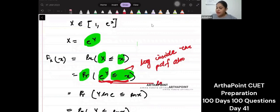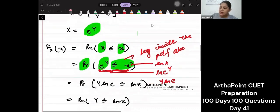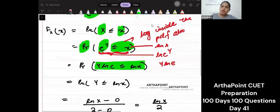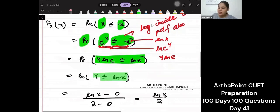So this will become ln e to the power y which means y ln e and this will become ln x. So I will get y ln e less than equal to ln x. ln e is 1 so I will get y less than equal to ln x.